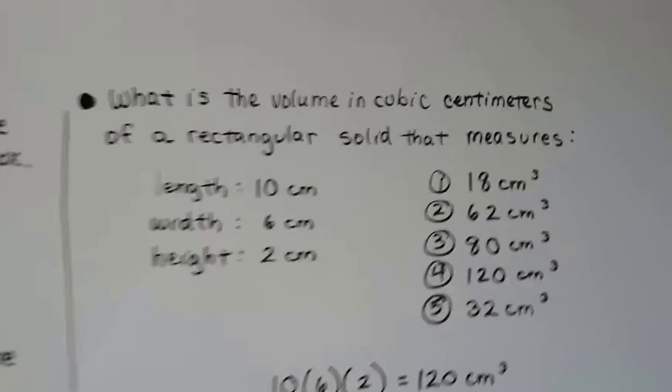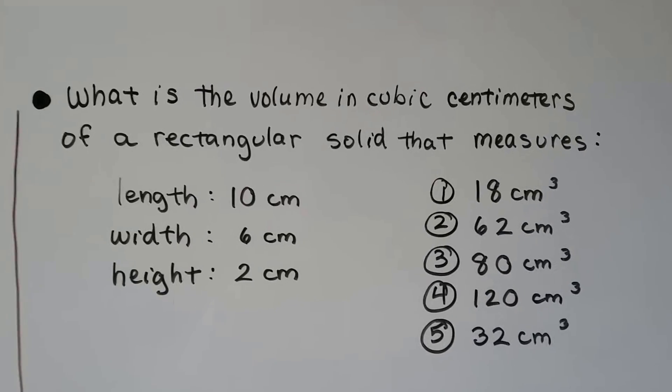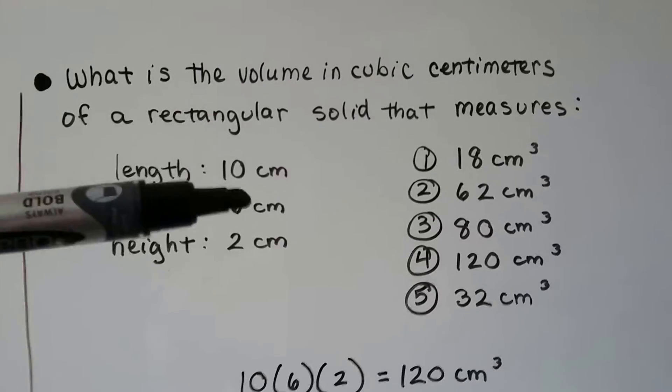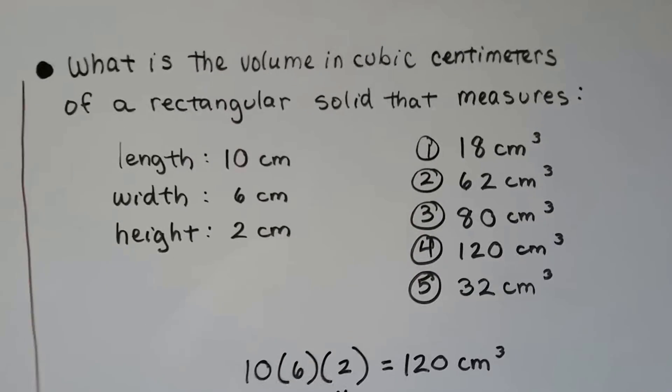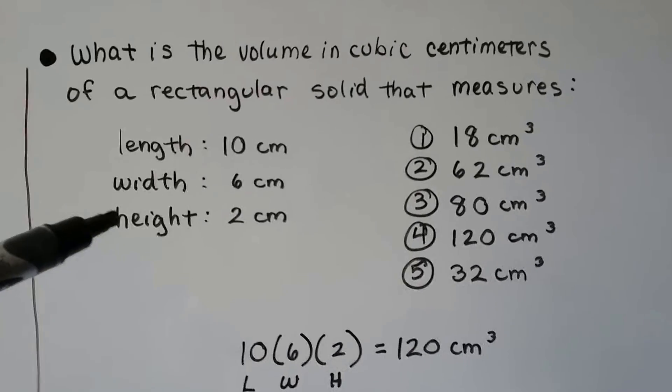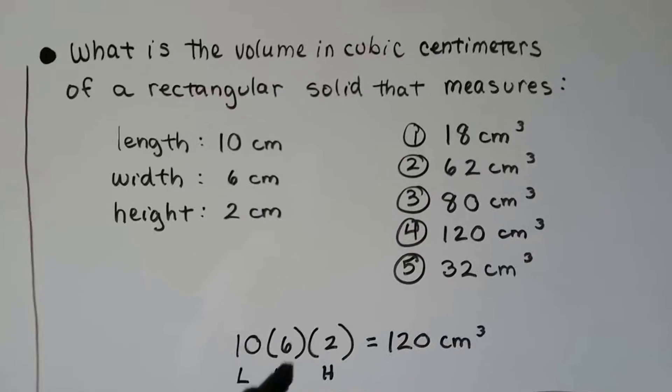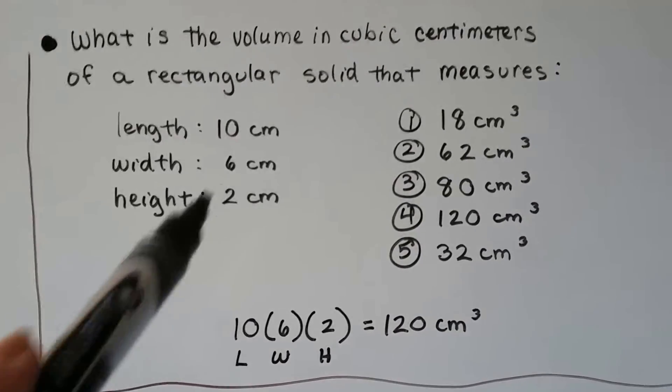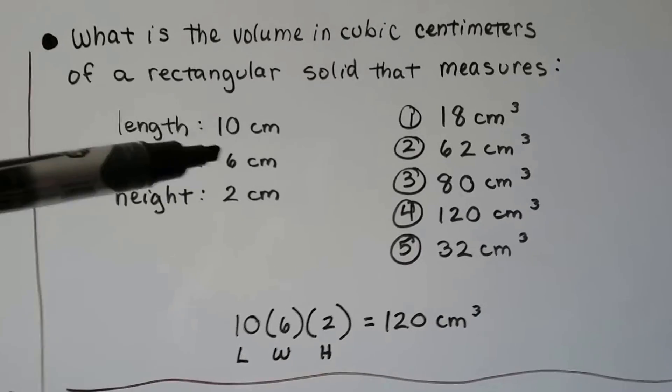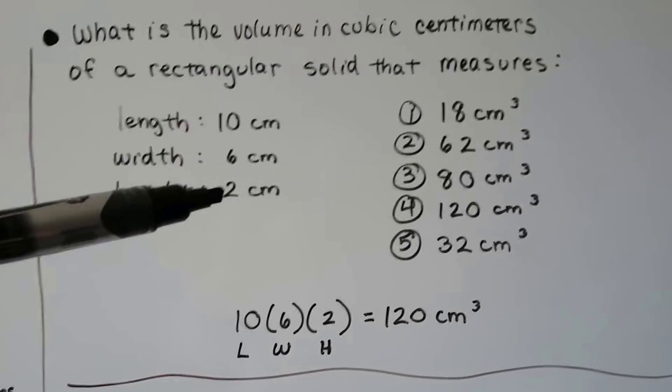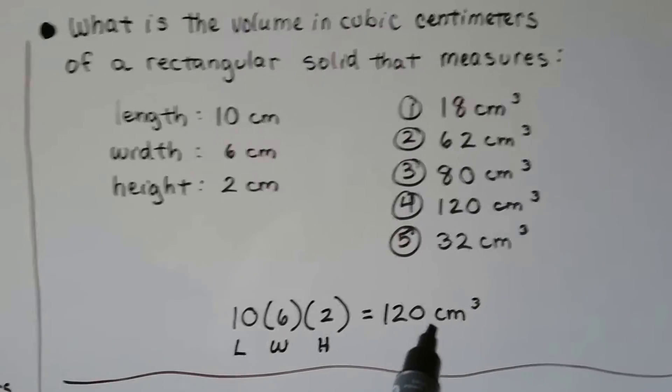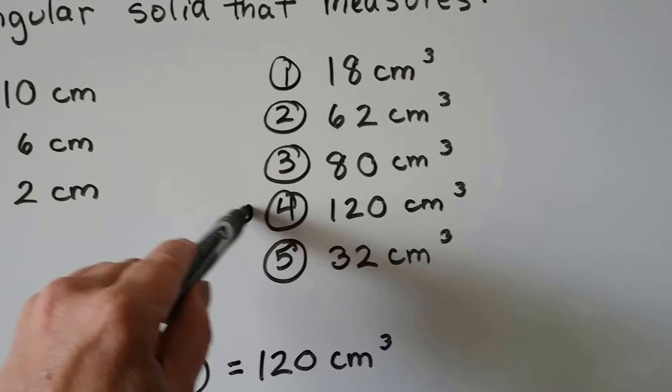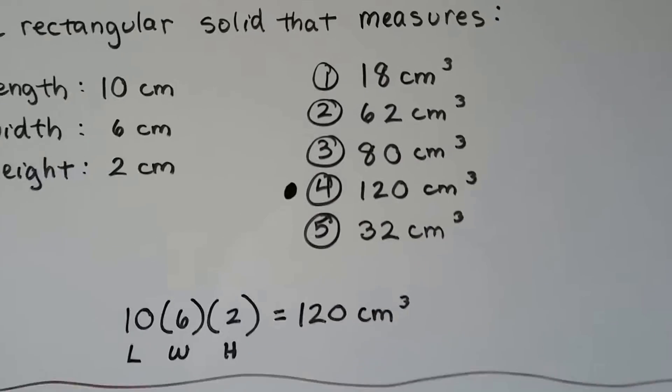So what is the volume in cubic centimeters of a rectangular solid that measures 10 centimeters length, 6 centimeters width, 2 centimeters height? We would do the 10 times the 6 times the 2. Well, 10 times 6 is 60, times 2 is 120. So it would be 120 centimeters cubed. So if you said number 4, that's the right answer.